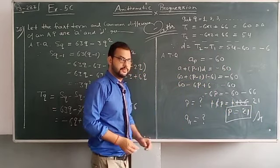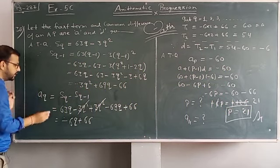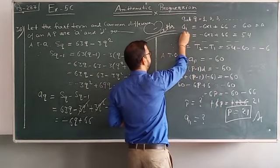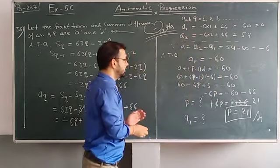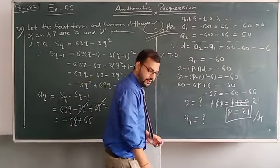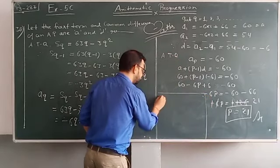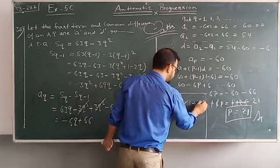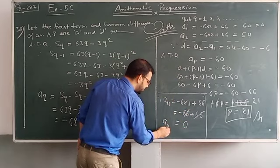Question is find the 11th term. TQ came as minus 6Q plus 66. If we put 11 in place of Q, we'll get the 11th term. So A11 is minus 6 into 11 plus 66, which is minus 66 plus 66, equals 0.